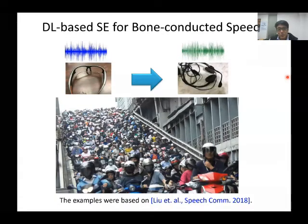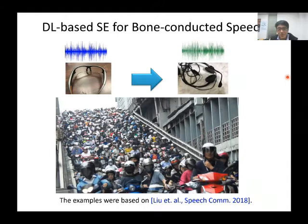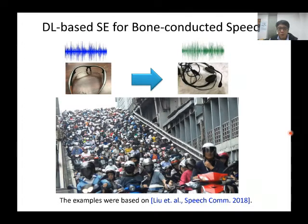This photo was taken from a street in Taipei. Motorcycle is a very common commuting tool in Taiwan. When riding a motorcycle, we cannot use a normal air-conducting microphone because wind noise will interfere with speech. To avoid wind noise, we can use a bone-conducting microphone. The idea is to capture the vibrations of our skull when speaking, so wind noise can be avoided. However, the channel characteristics of air-conducting and bone-conducting microphones are rather different.